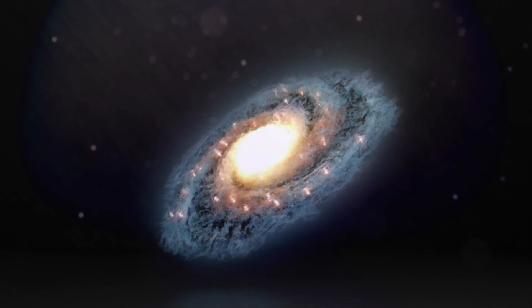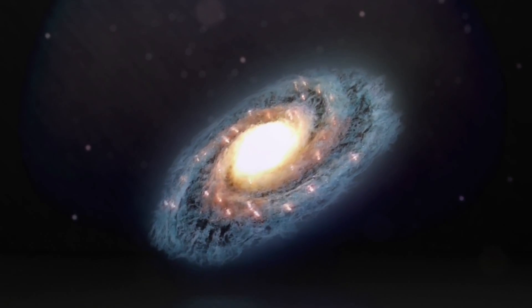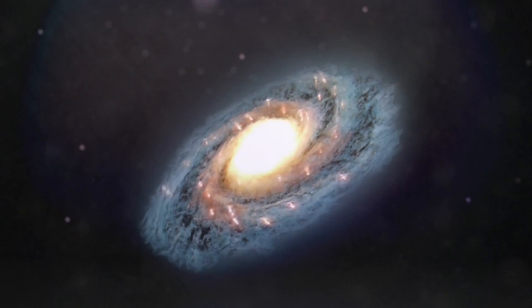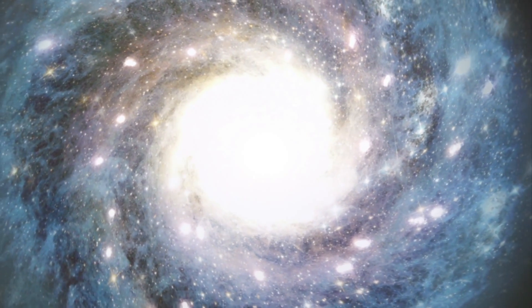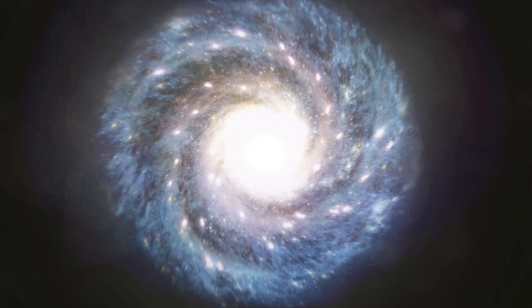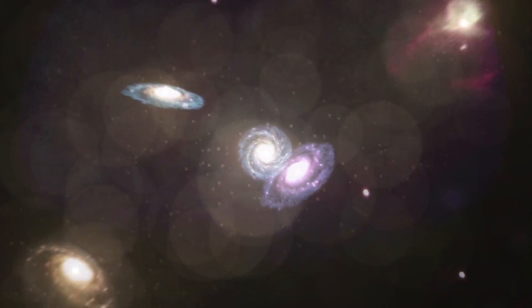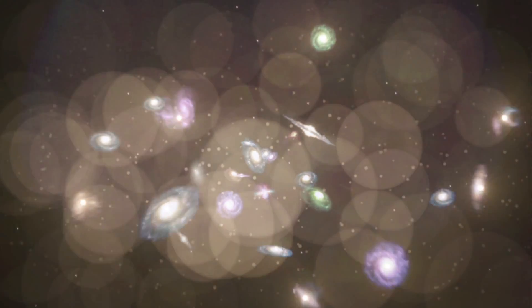Of all the spectacles mankind has viewed through a telescope, there are few lovelier than a spiral galaxy. Majestic whirlpools of stars, they rotate in a stately and predictable dance. The fact that we see many billions of them in our telescopes tells us they are both common and stable.